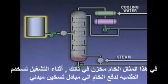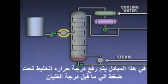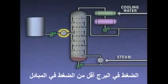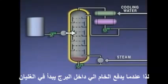Let's take a look at a simplified representation of a distillation system. In this example, the feed is stored in a tank. During operation, a pump is used to move the feed from the tank to a preheater. In the preheater, the mixture is heated under pressure to just below its boiling point.